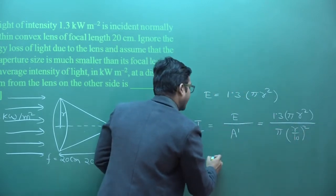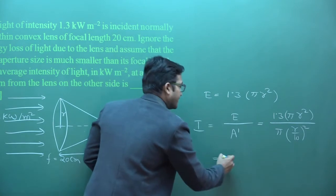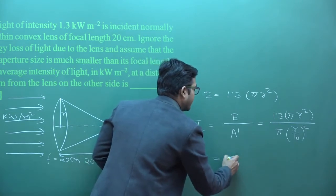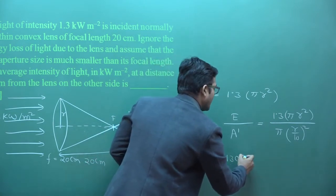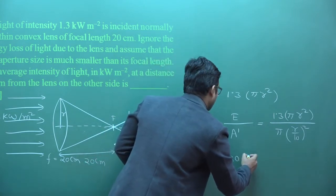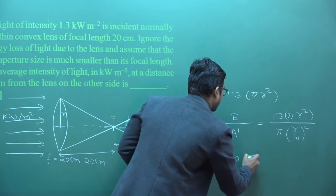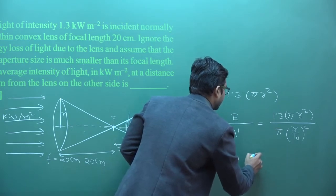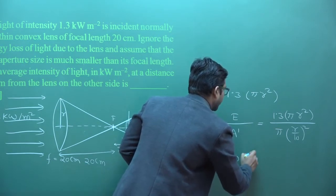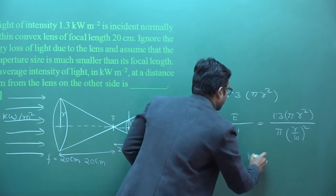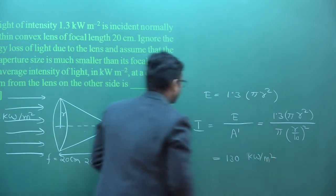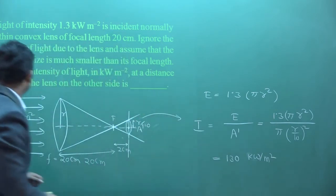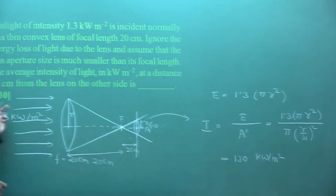Solving this, the answer is 130 kilowatt per meter square.